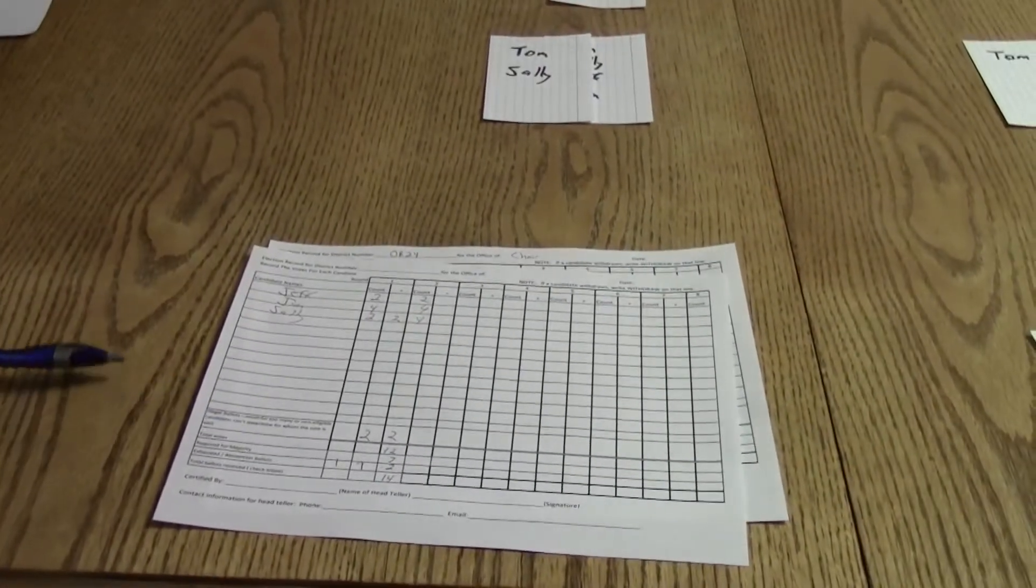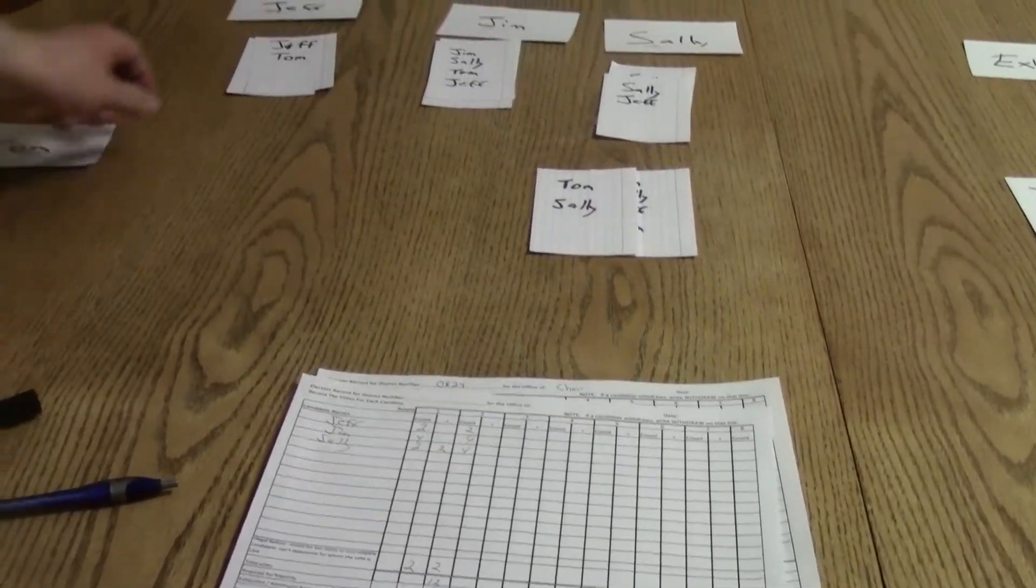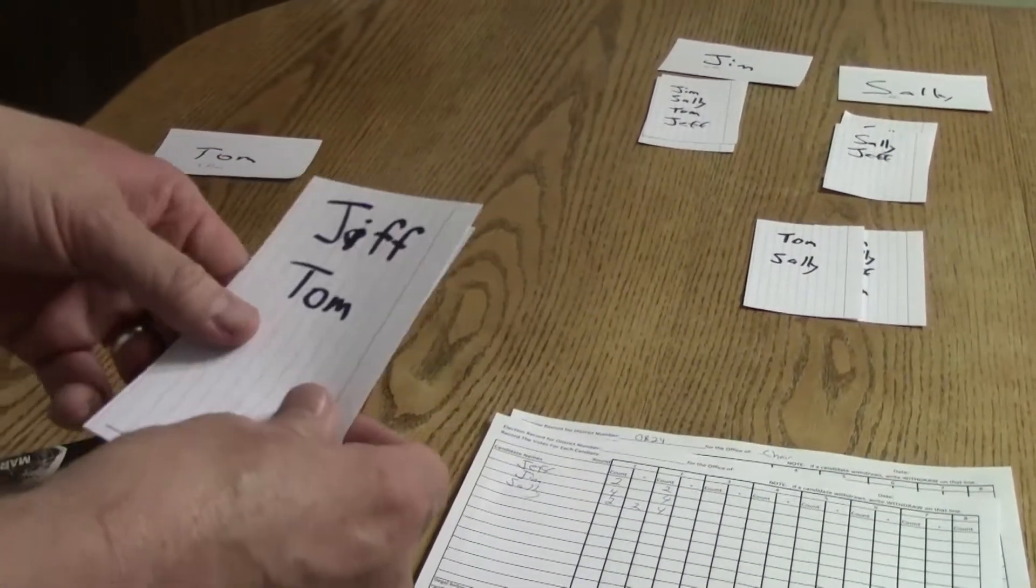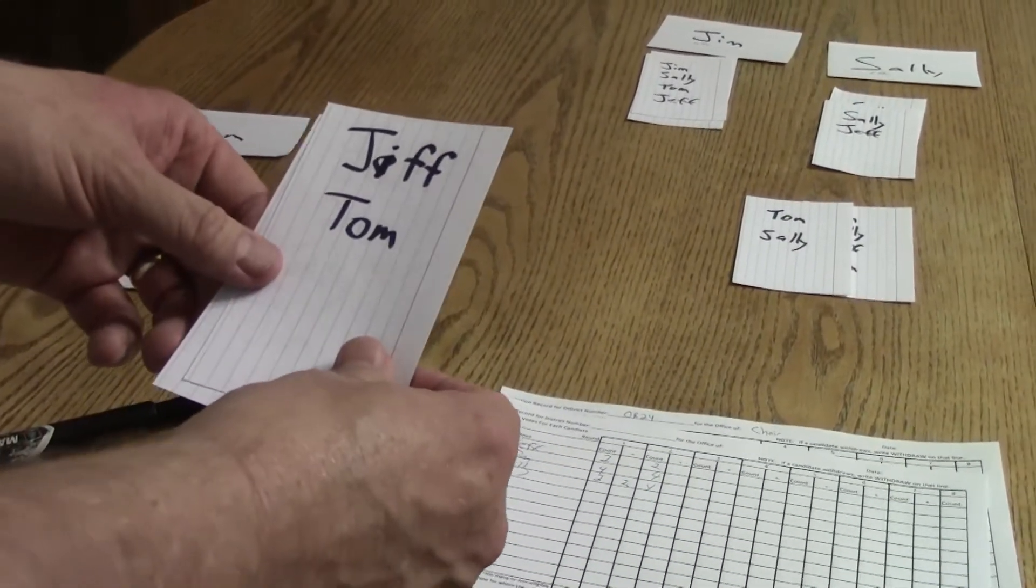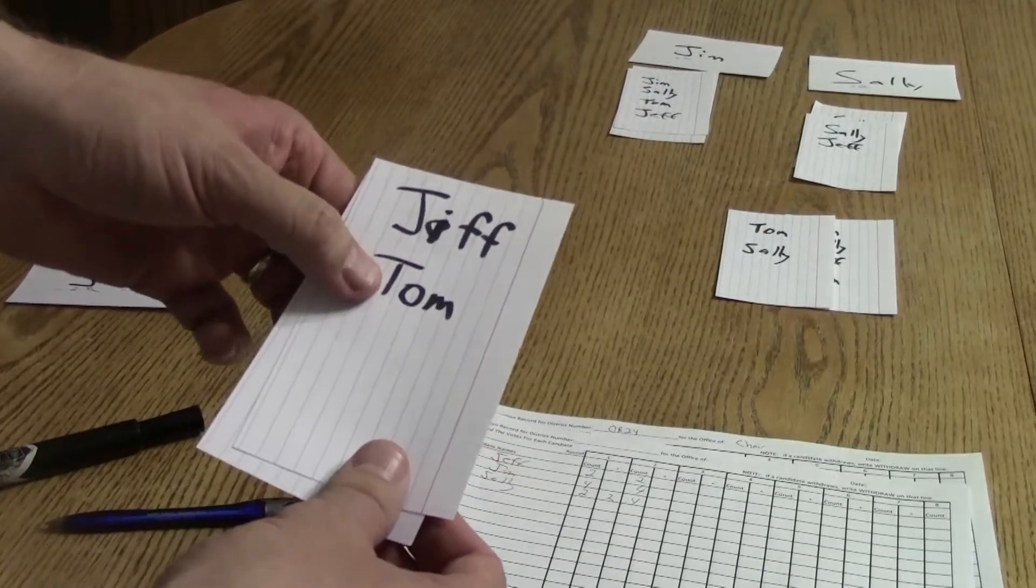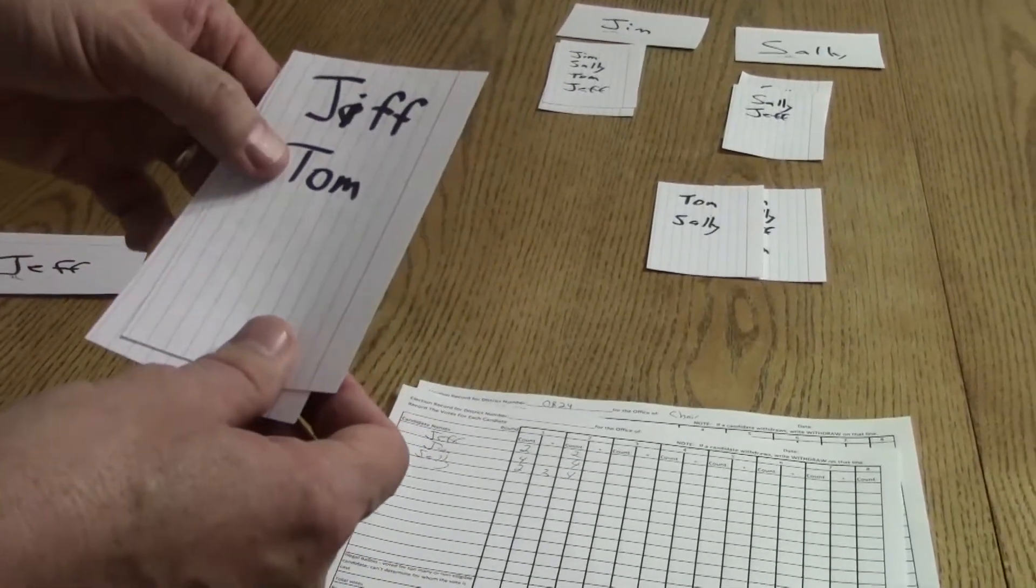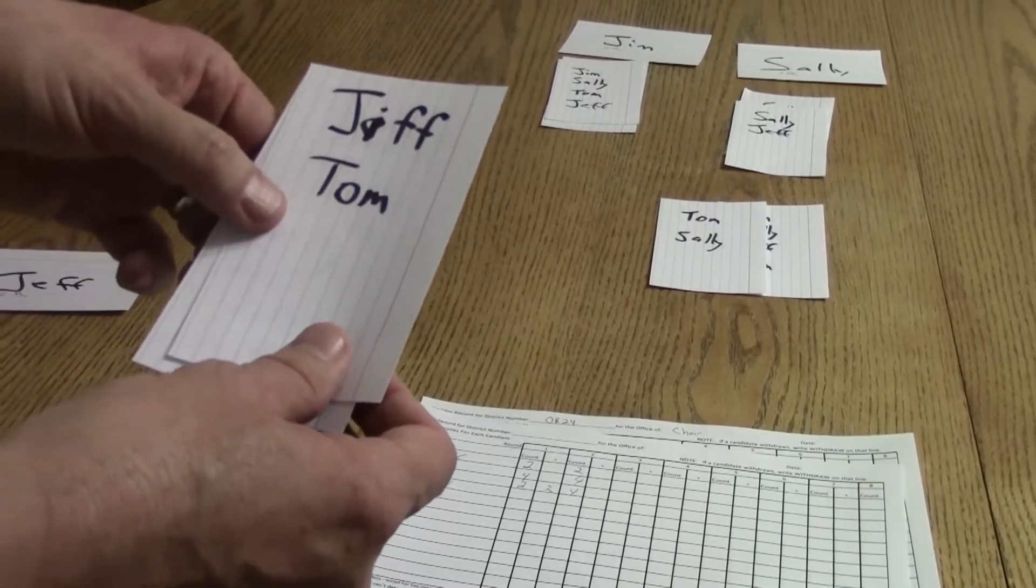Now we're going to eliminate Jeff. So we're going to take Jeff's card and put it down here. Now in this case, Tom has been eliminated already because he's already been elected. So this vote is now going to be in the exhausted column. So we'll put that over here under exhausted. There's no more votes we can use.